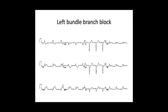The next example is left bundle branch block. Here you can see the QRS complexes are widened, but the morphology is very different to what we saw with right bundle branch block. In lead I, you can see that the QRS complexes are predominantly downward, and in leads V5 and V6, although it isn't very clear on this low resolution picture, you can see an M pattern in the QRS complexes — and that is the typical pattern of left bundle branch block.